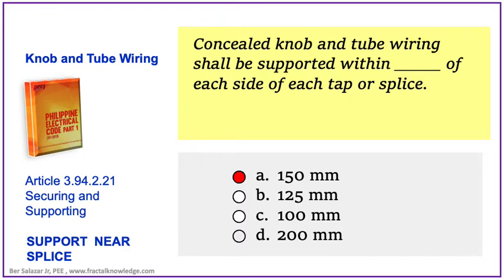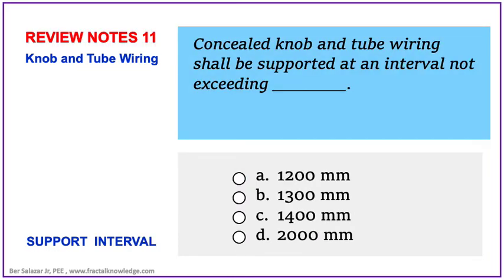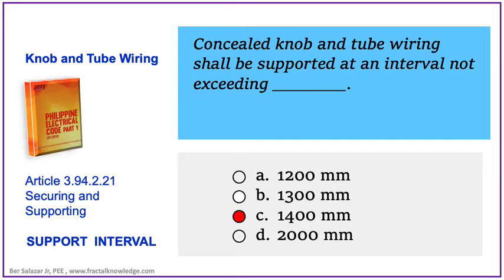Another possible problem asks: concealed knob and tube wiring shall be supported at an interval not exceeding blank. The choices are 1.2 meters, 1.3 meters, 1.4 meters, or 2 meters. The keyword here is 'support interval.' The answer is letter C: 1.4 meters or 1400 mm. Knob and tube wiring shall have this support interval.